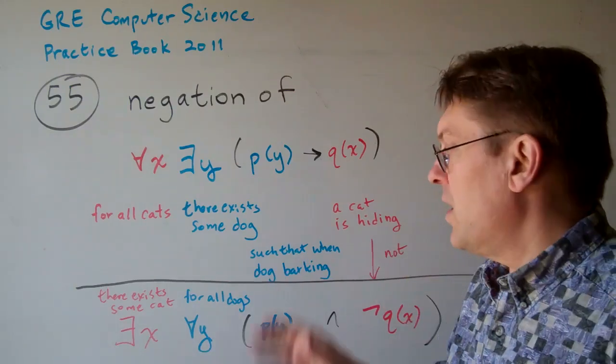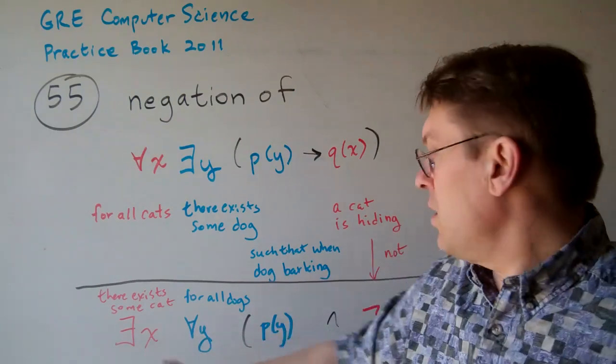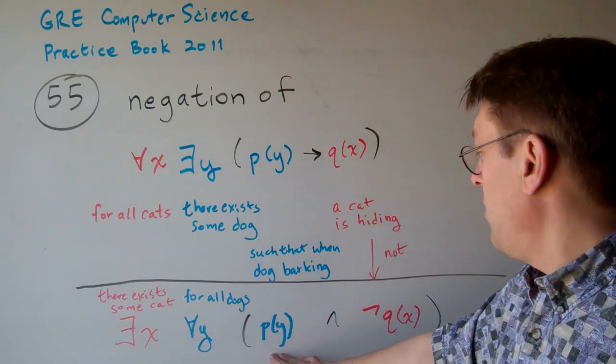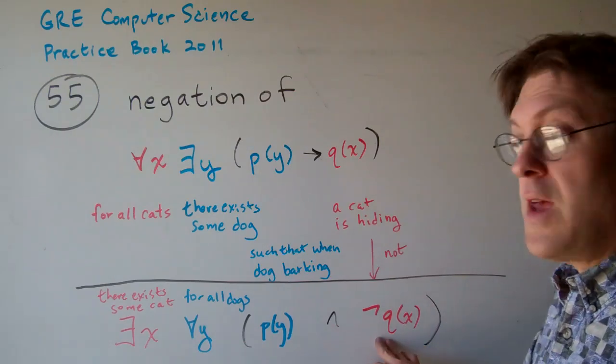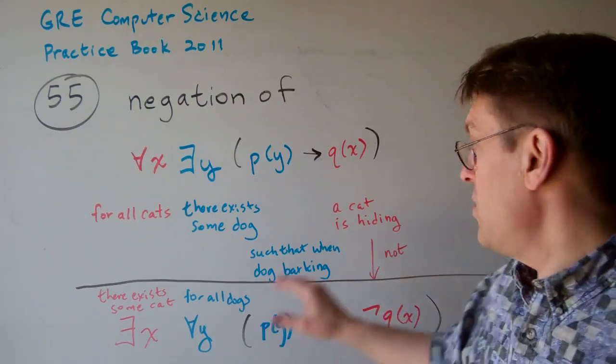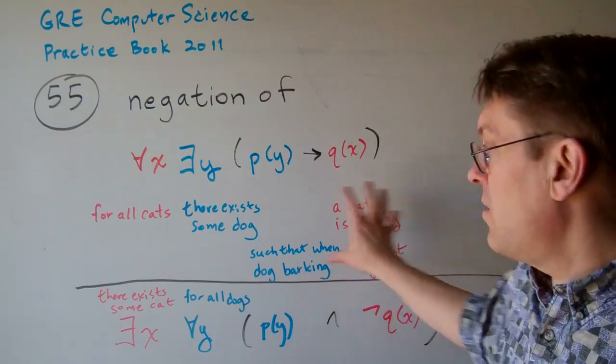If it's not true, if we negated this, then there must be some cat that's true for all dogs that when a dog is barking, the situation exists where there's a dog barking and there's a cat not hiding. Because this one says that there's got to be a cat hiding if a dog is barking. That's what this is saying.